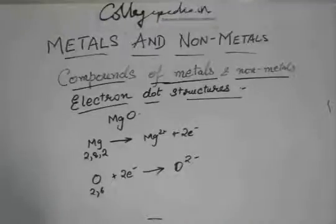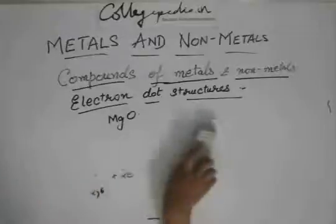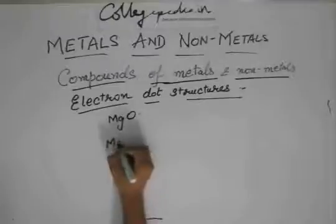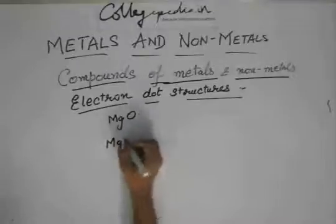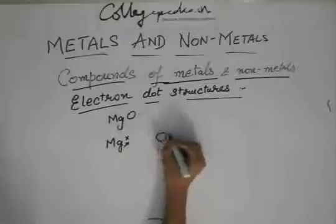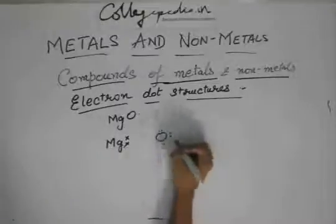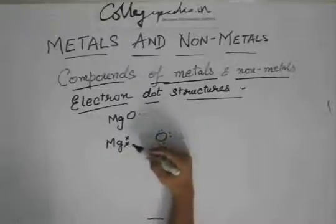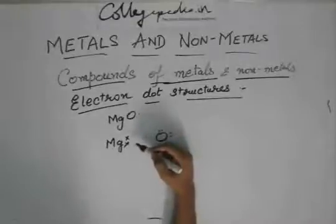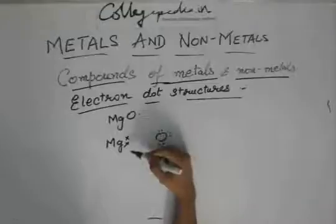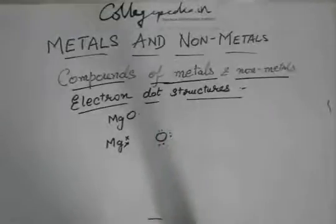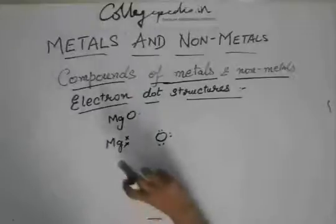And then the electron dot structure would be... Remember that these electrons are only the electrons in the outermost shell. You don't draw the electrons which are present in the inner shells. I have drawn only the 2,8,2, the 2 which are outside, not the 2,8 which were inside the shell.